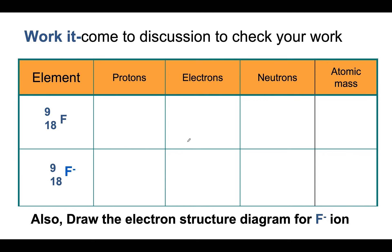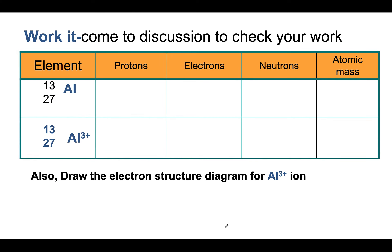Here's a table for you to work through. I would advise you not only to complete the table, but also to draw the electron structure diagram for the ion and for the neutral atom, and compare them. The best way to learn this is by practicing. In this example you have a negatively charged ion, and here a positively charged ion — complete these exercises and check your work in discussion.